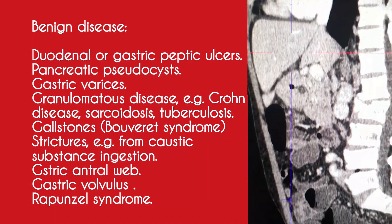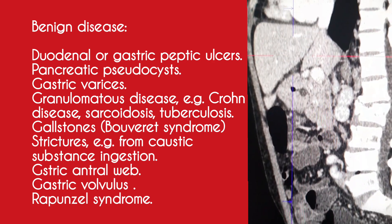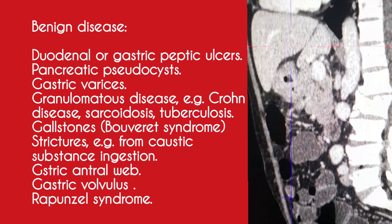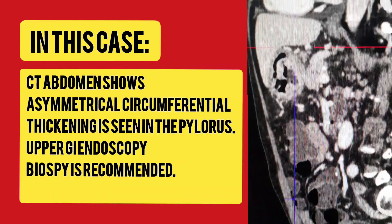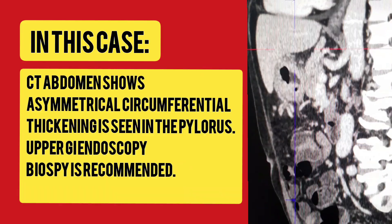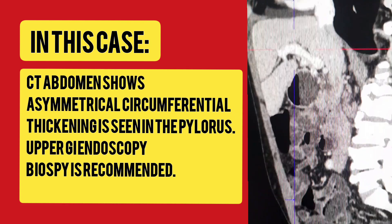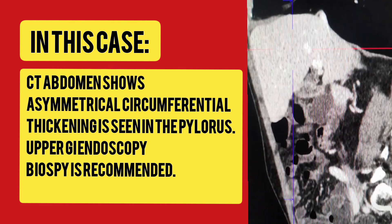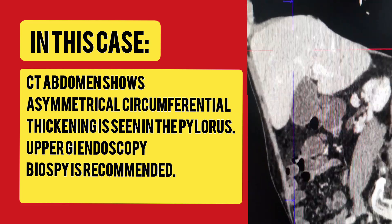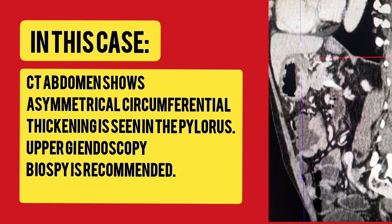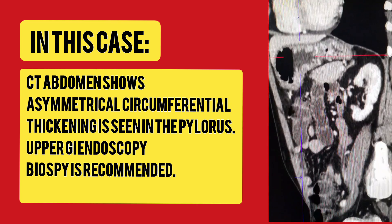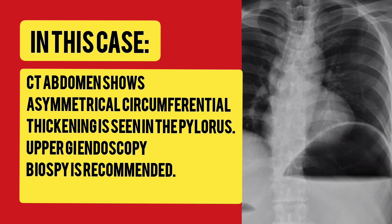Additional benign causes include gastric antral web, gastric volvulus, and Rapunzel syndrome. In this case, a CT abdomen shows asymmetrical circumferential thickening in the pylorus. Upper GI endoscopy with biopsy is recommended.